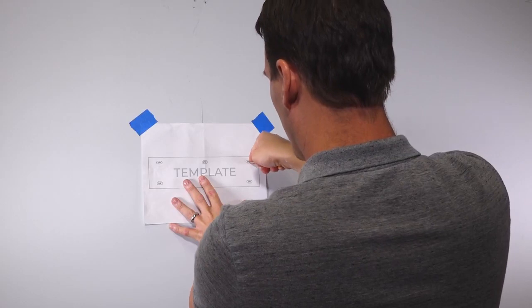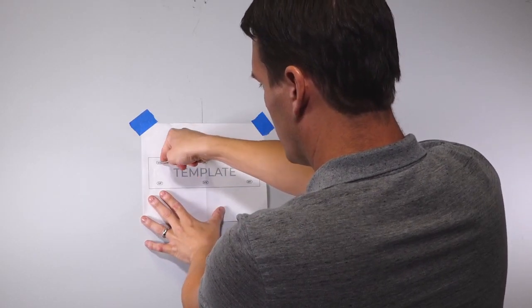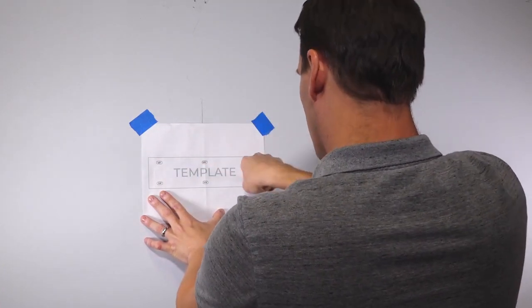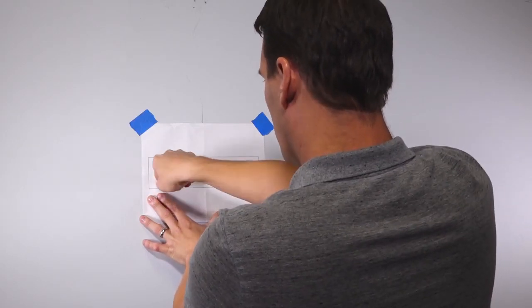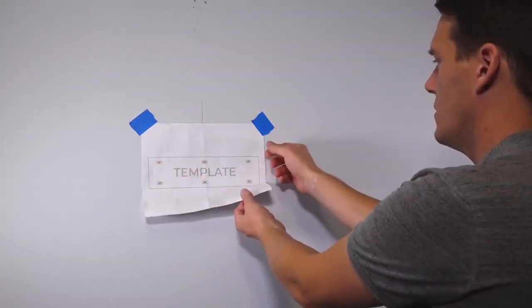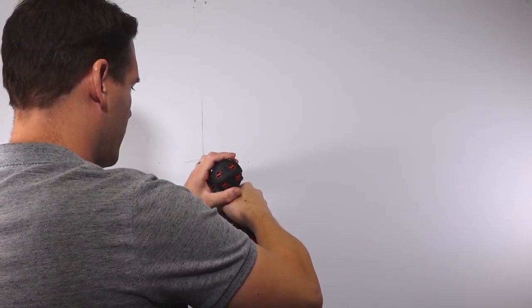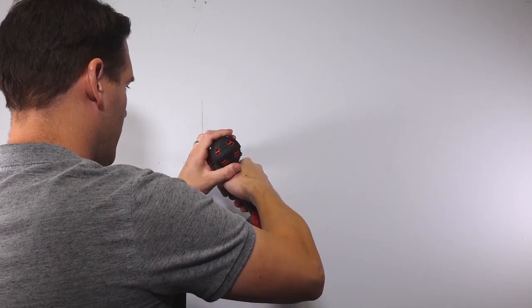Mark all six holes using a 1/8 inch drill bit. Drill the two pilot holes into the stud for the wood screws.